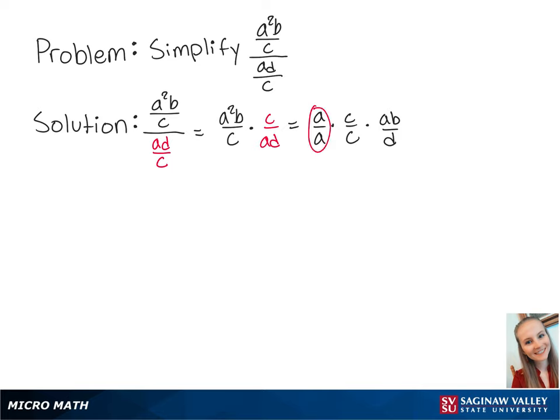Now a over a equals 1 and c over c also equals 1. So all of this equals 1 times 1 times ab over d, which just equals ab over d. And this is the final answer.